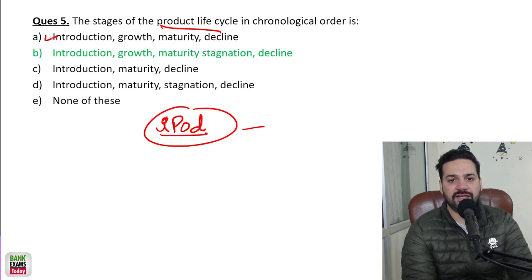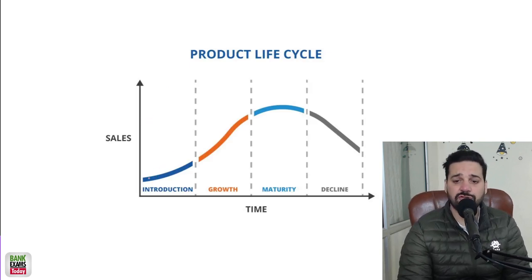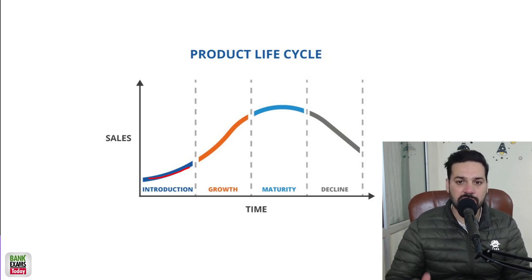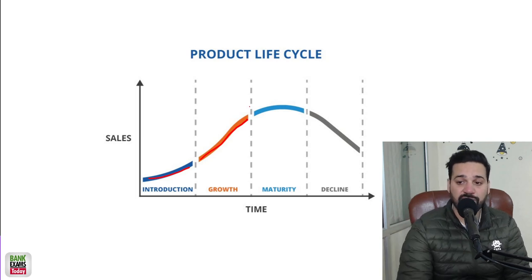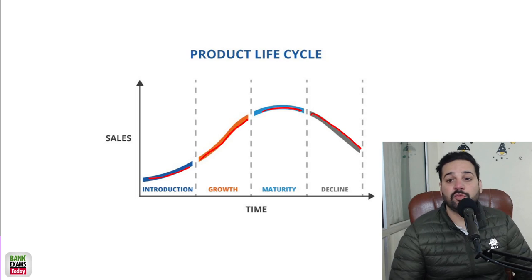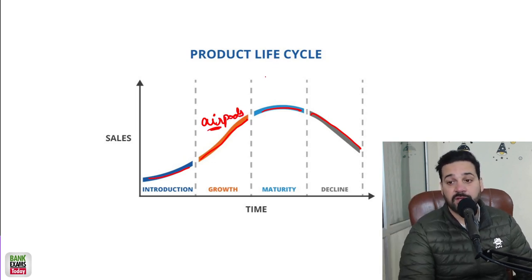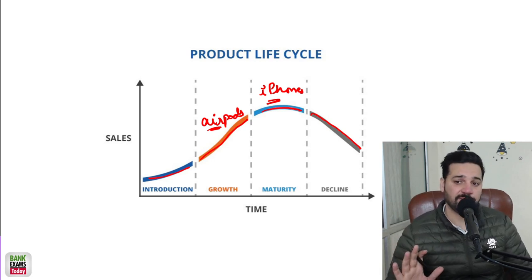Both maturity and stagnation are correct stages. In the beginning when the product is introduced, not many people may be interested in buying that product. Once the product is successful, the rate at which demand increases is amazing — that is the growth phase, then maturity phase, then decline phase. AirPods — the wireless headphones — are at the growth stage; the demand is rising. The iPhones are at the maturity stage; the demand at the global level is not rising at a fast rate.